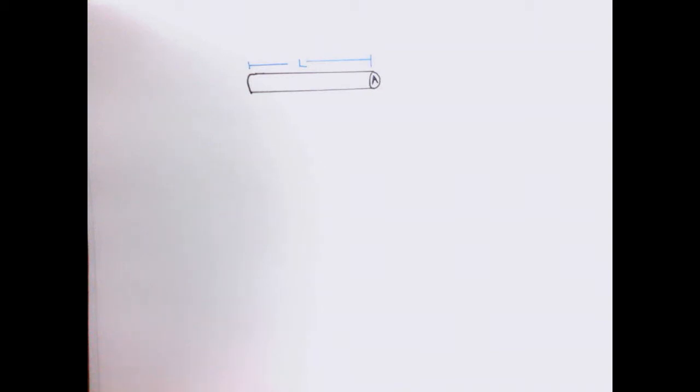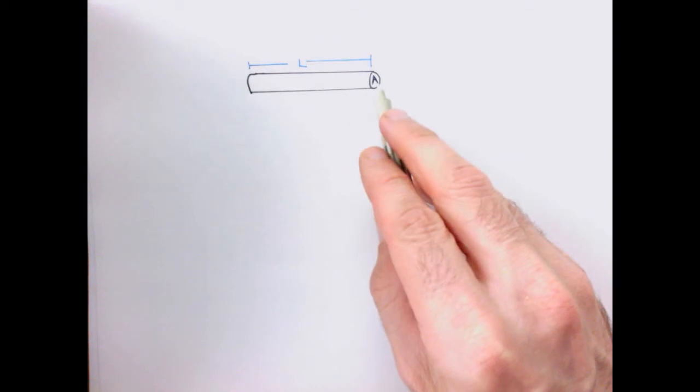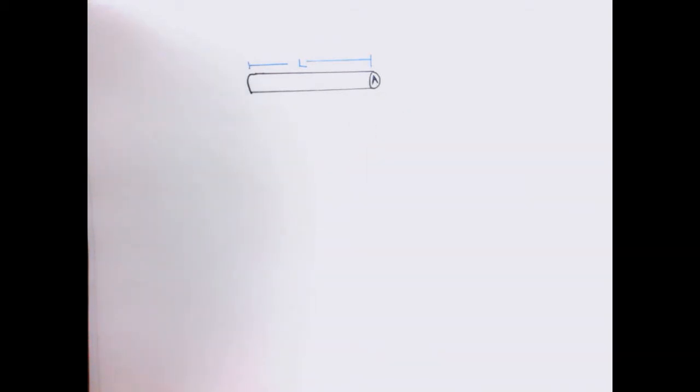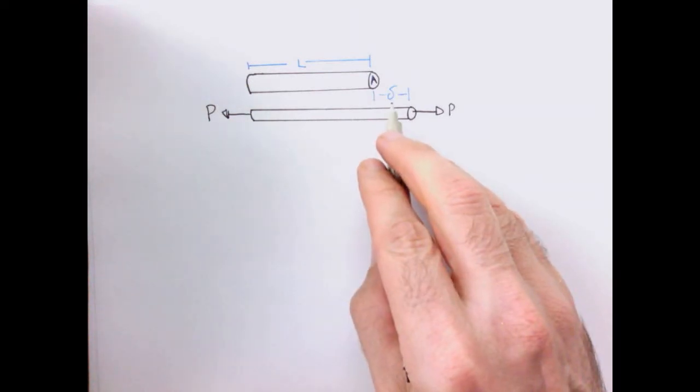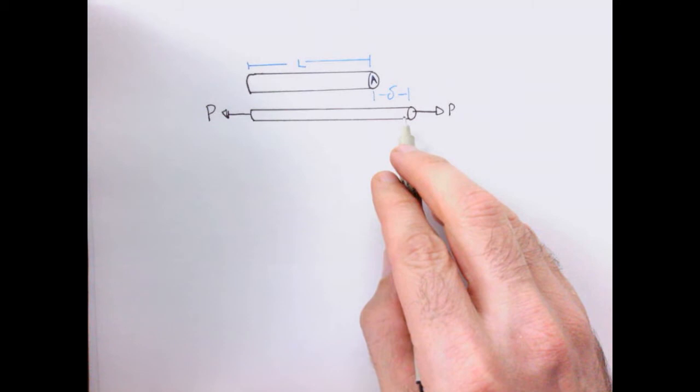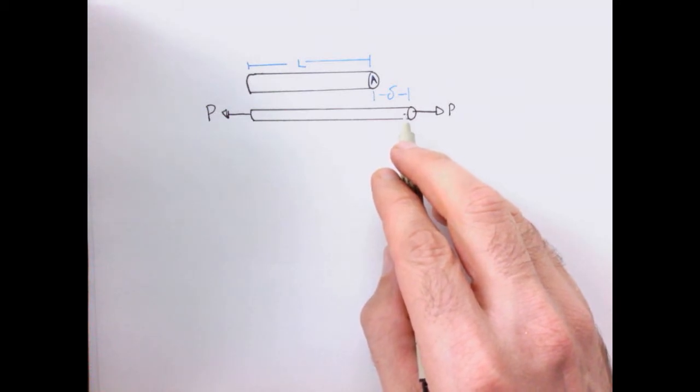Let's go to our bar in tension again. So I'm going to have a bar of length L and cross-sectional area A, and I'm going to apply a load P to it. And when I apply that load P, the bar grows by an amount delta, and it decreases in diameter, so the cross-sectional area shrinks a little bit.